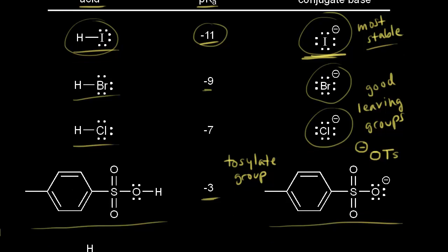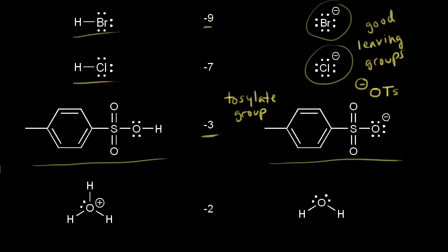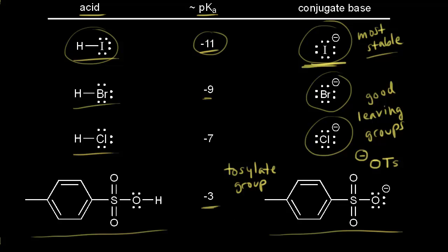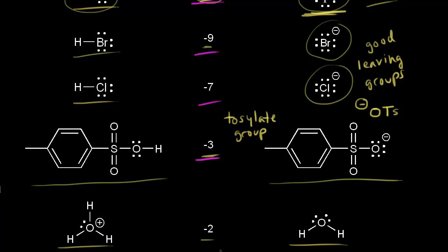Moving down to H3O plus, the hydronium ion with a pKa value of negative two — the conjugate base is H2O, and water is also a good leaving group. So all the acids we discussed have negative pKa values: negative 11, negative nine, negative seven, negative three, and negative two. And notice all of the conjugate bases are good leaving groups. So if an acid has a negative pKa value, the conjugate base will be a good leaving group.